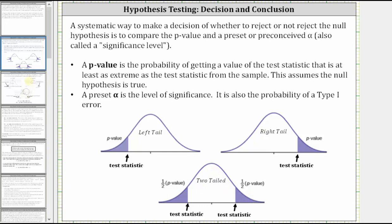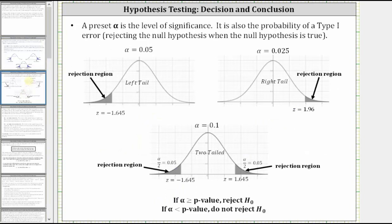Now let's take a look at alpha. Alpha is a level of significance, which is also the probability of a type one error — the error of rejecting the null hypothesis when the null hypothesis is true. We have a left-tailed test, right-tailed test, and two-tailed test, where the test statistic is a z-score. For example, when alpha equals 0.05, the z-score is negative 1.645, and the region to the left of the z-score is called the rejection region, with an area of 0.05.